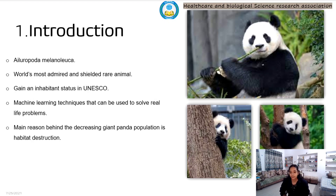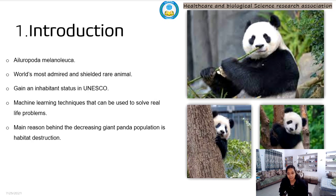A 2007 report shows there are only 239 pandas living in captivity inside China and another 27 outside the country. The Giant Panda is the world's most admired and protected rare animal and was able to gain World Heritage status in UNESCO. We used a machine learning linear regression technique for this research work, and the main reason behind pandas' decreasing population is habitat destruction — humans are taking over their land for overdevelopment.